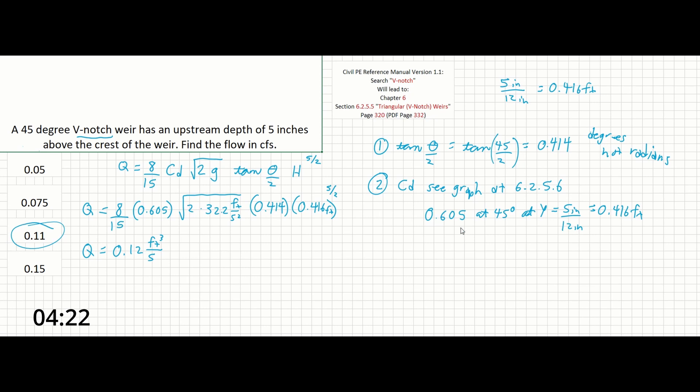And that's going to be because of probably what you select for Cd on the graph and how many units of precision you might use when calculating for your tangent value here. Again just make sure that you're using degrees and not radians for this question.